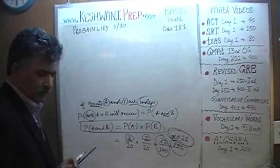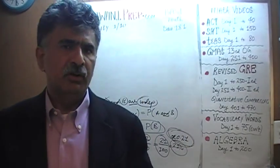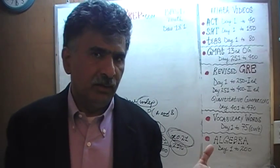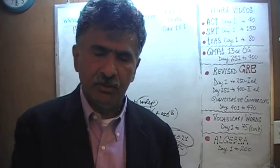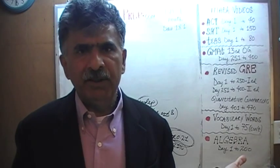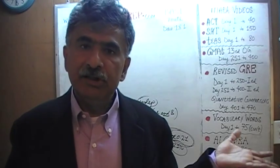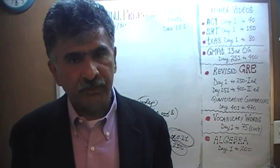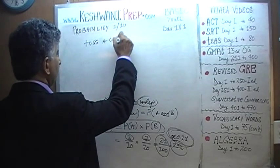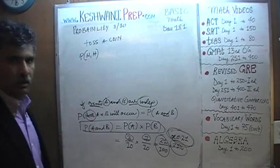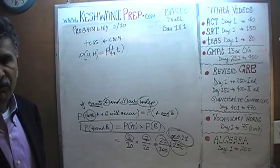A typical problem on the test involves tossing a coin or rolling a dice. Let's talk about tossing a coin. If you toss a coin, whether you get a head or a tail on the first toss has absolutely no bearing on the odds of the next toss. Each time you toss a coin, the events are independent — the coin has no memory. The odds of getting either a head or a tail is 50% each time. Let's find the odds of getting two heads in a row — which is the same as two tails in a row.